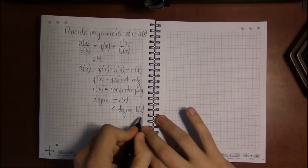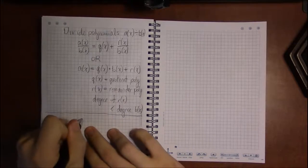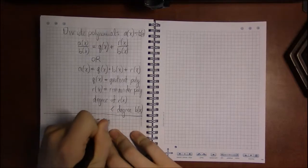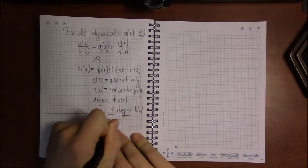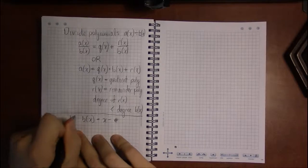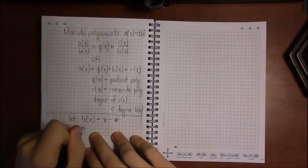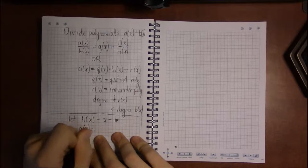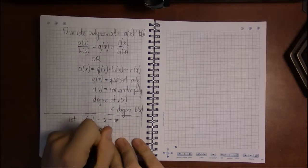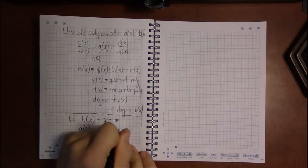So let's say, for instance, B of X is just X minus some number. If B of X is just X minus a number, then what happens here is the following: A of X now becomes Q of X times B, which in this case is X minus some number.